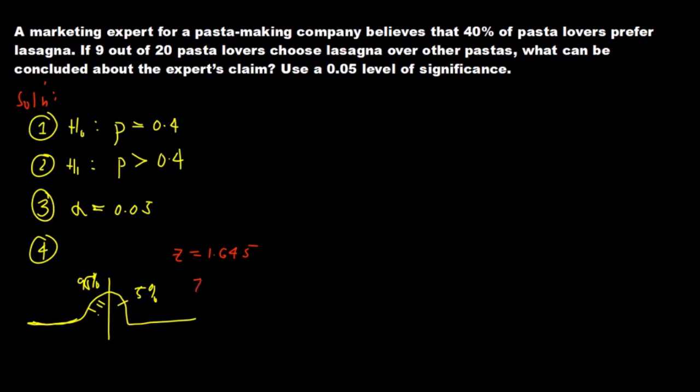Our decision rule: if our computed Z is greater than our critical Z of 1.645, we will reject our null hypothesis. Otherwise, meaning if it is equal or less than 1.645, then we will accept H0, our null hypothesis.